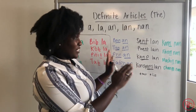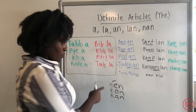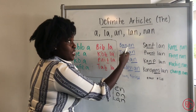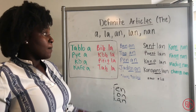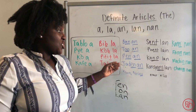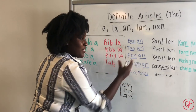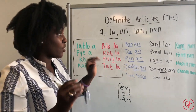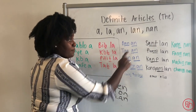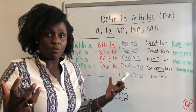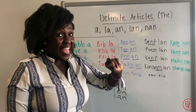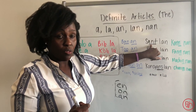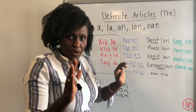Now let's deal with the nasal vowels. If you have a word that ends in a nasal vowel — again with en, on, or an — the definite article you're going to use is an. Examples: bon-an, ton-an, pen-an, jaden-an. It's almost as if they're swallowed together, connecting the nasal vowel with the definite article an.